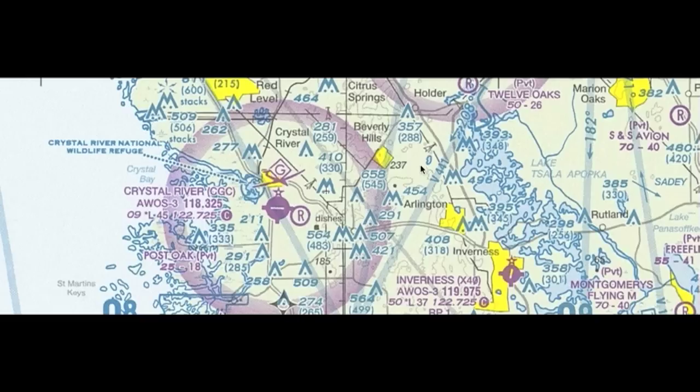Same thing out here — if we took off out here, right from this little lake here, we'd be in Class Golf, Class G airspace until 1200 feet. Once we hit 1200 feet, we're officially in Echo airspace, and we continue rocking it straight up until we hit Alpha airspace at 18,000 feet. You can do that all across the sectional chart — it's a good way to get a grasp of your airspace.